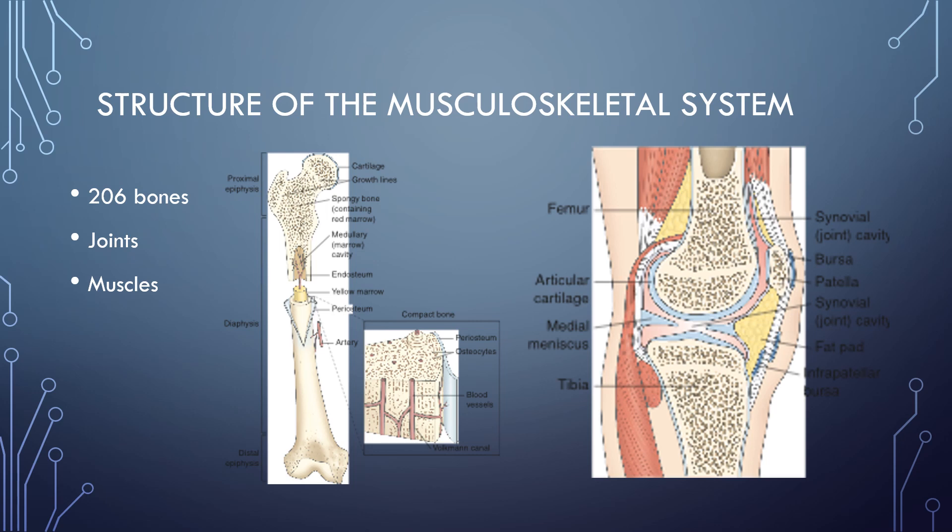The musculoskeletal system is made of bones, joints, and muscles. We have 206 bones in our body, and they consist of long bones, short bones, flat bones, and irregular bones. Our bones are in a constant state of creation, maintenance, and absorption. The regulating factors for these are the amount of stress and weight bearing on the bones, our vitamin D levels, our parathyroid and calcitonin activity, and blood supply to the bones.